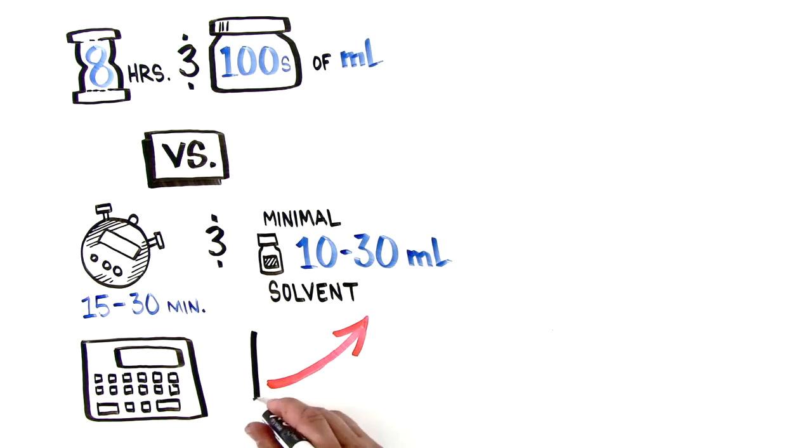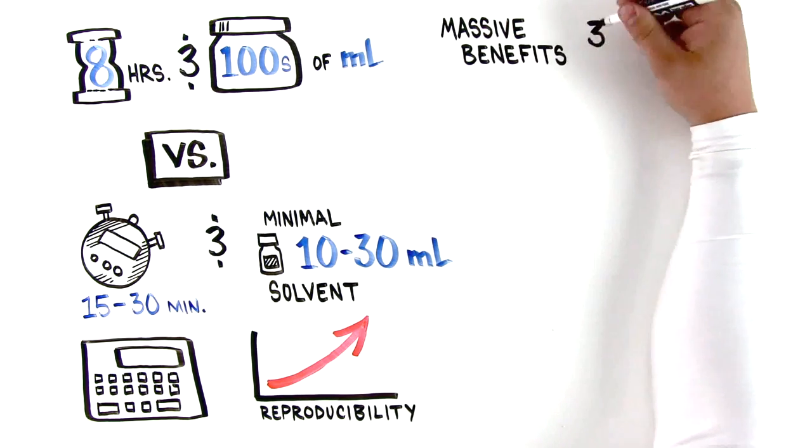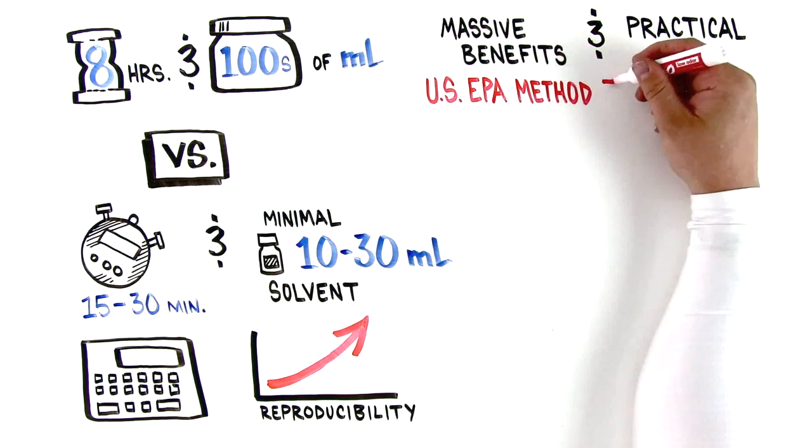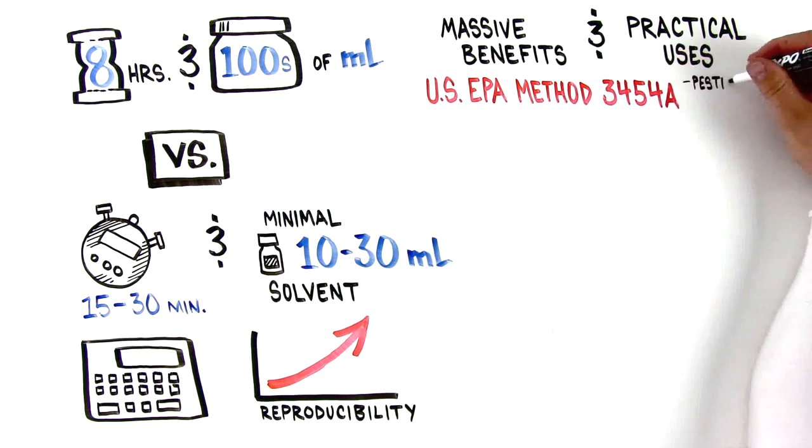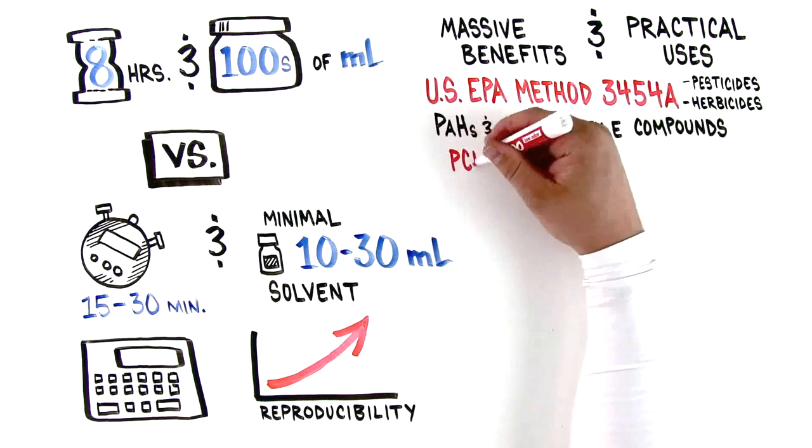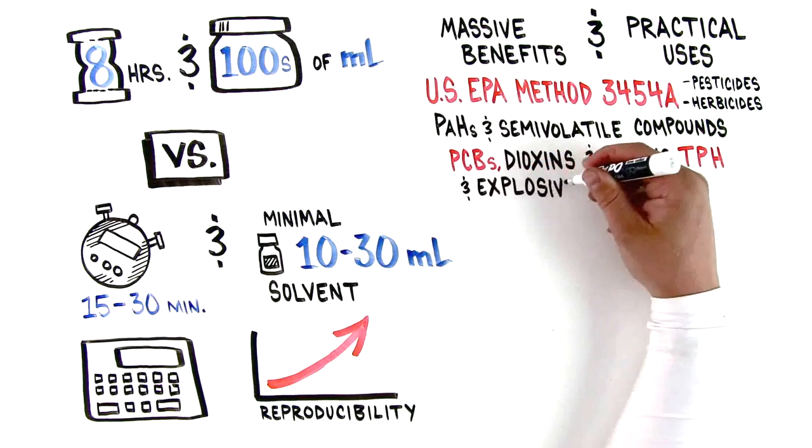The accelerated solvent extraction technique has massive benefits and practical uses. It's accepted in U.S. EPA method 3454A for extracting pesticides and herbicides, PAHs and semi-volatile compounds, PCBs, dioxins and furans, TPH and explosive compounds.